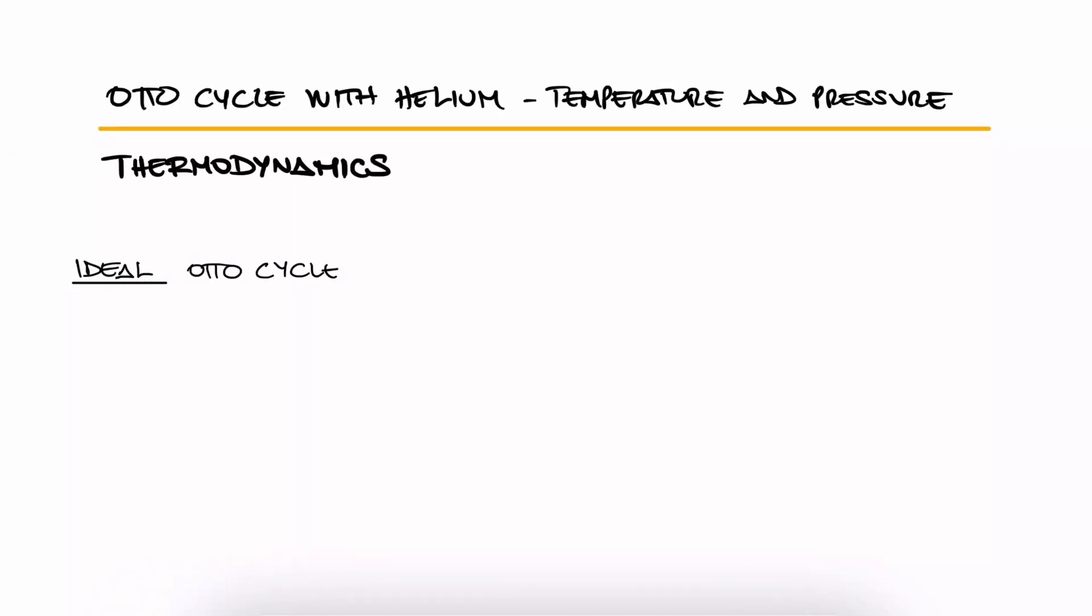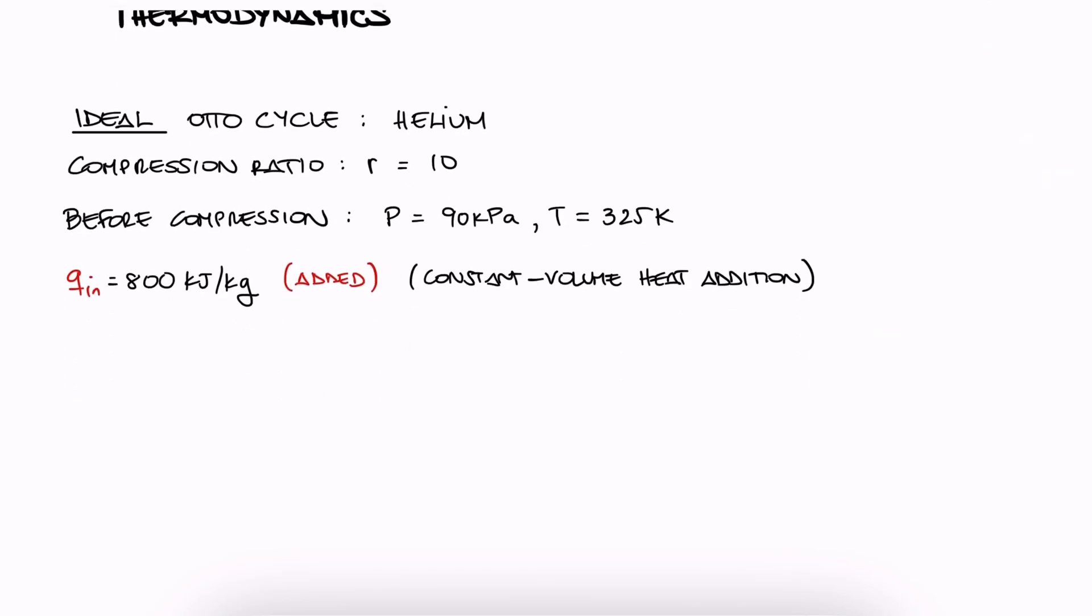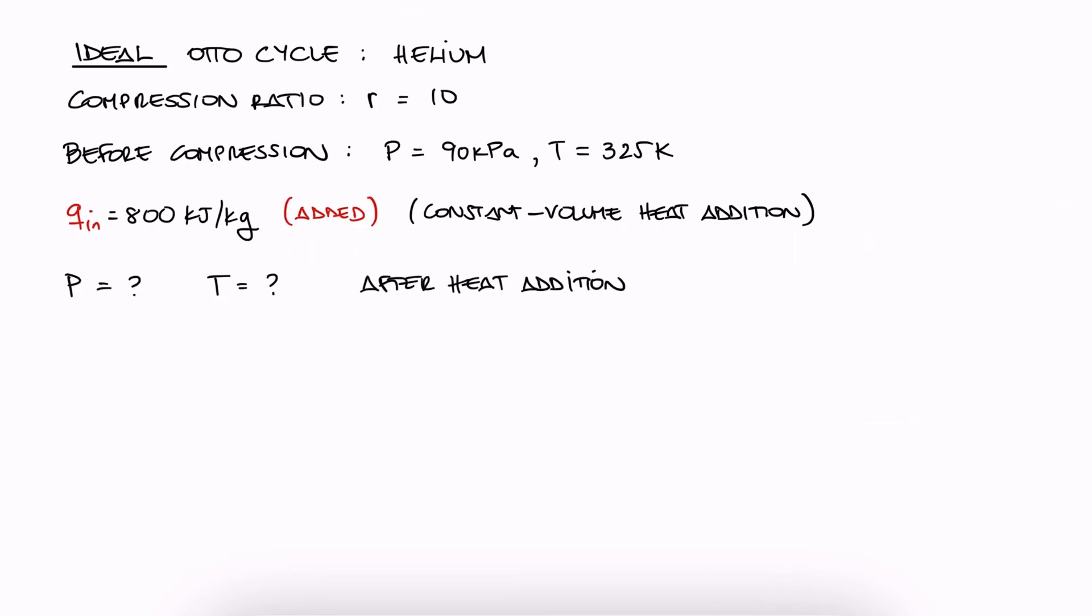An ideal Otto cycle that has a compression ratio of 10 uses helium as the working fluid. At the beginning of the compression process, air is at 90 kilopascals and 325 Kelvin. If 800 kilojoules per kilogram of heat is transferred to the helium during the constant volume heat addition process, what is the pressure and temperature at the end of the heat addition process?